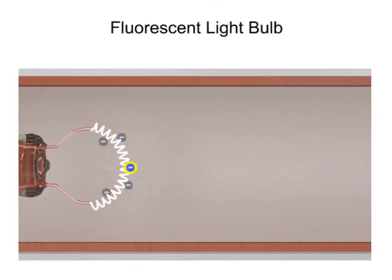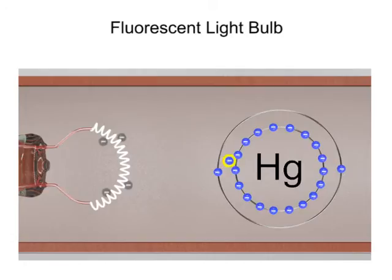If one of the free electrons collides with an electron of the mercury vapor, the electron is bumped from a lower to a higher energy level. The electron quickly returns to its lower energy state and in the process releases an ultraviolet photon.